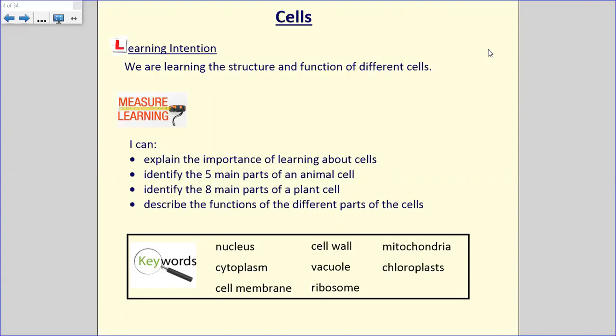Keywords down the bottom, say them out loud after me, the difficult ones. Mitochondria, go on, say it. Good, well done. Cytoplasm, vacuole, chloroplasts and ribosome. I think you can say the others, but we'll be using those terms quite a lot.